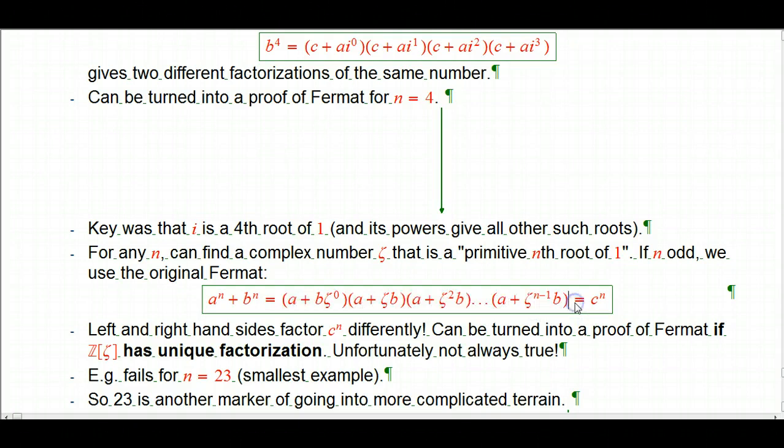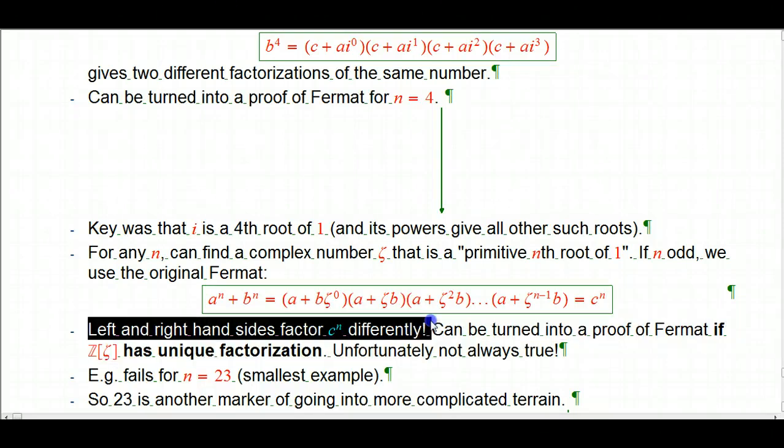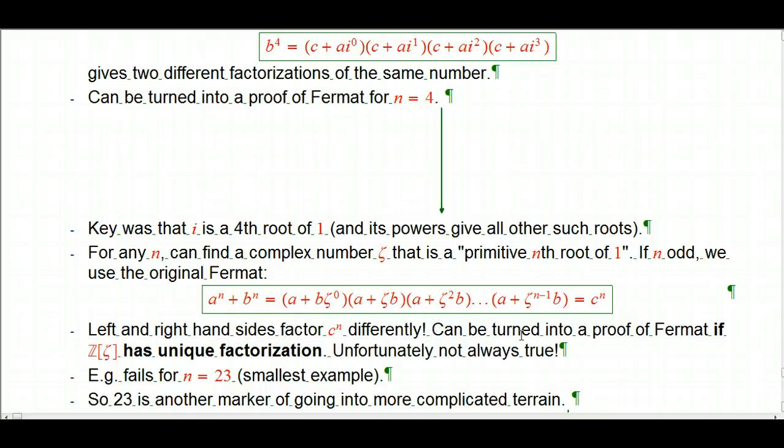And again, if you had a Fermat solution, which you're trying to show is impossible, that's equal to c to the n. So the left and right hand sides, again, factor these numbers rather differently. Once again, this can be turned, with a certain amount of work, it can be turned into a proof of Fermat for this value of n, if Z adjoined this nth root of unity has unique factorization. And this was really thought to be an honest to God proof of Fermat for all n, because people didn't realize that this might fail in these kinds of situations. And of course, from the previous videos, we can see that would be pretty lucky if they all had unique factorization. And it's not true. That's why it took another 100 plus years to prove Fermat with very different techniques.